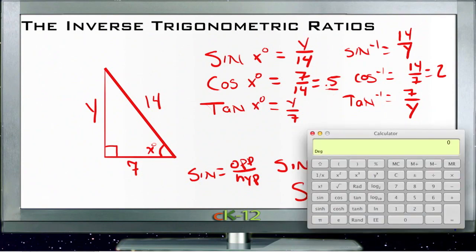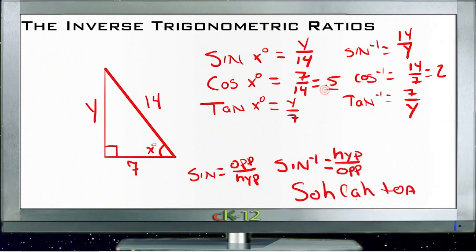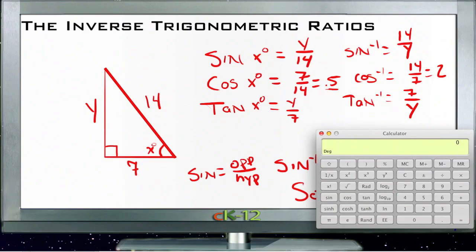So what we want to do then is use the inverse cosine, cosine to the negative 1. And if we punch 0.5 into our calculator and then calculate the inverse sine of it, so we put 0.5 and we use the shift key. Notice that cosine right now is just COS. We use the shift key and now it's COS to the negative 1. If I punch that in, I get 60.